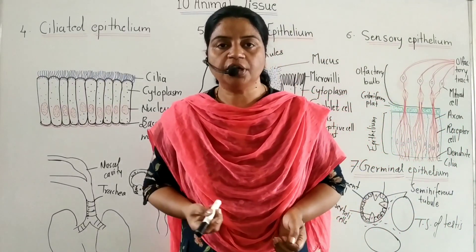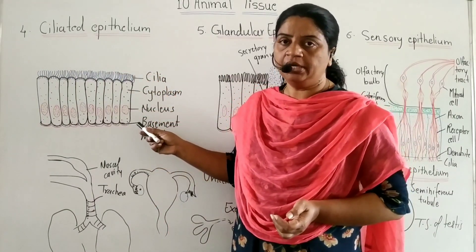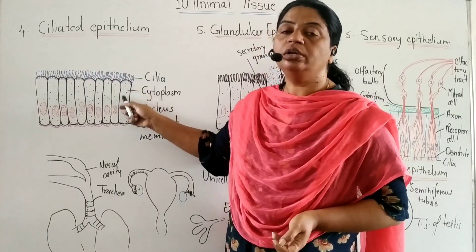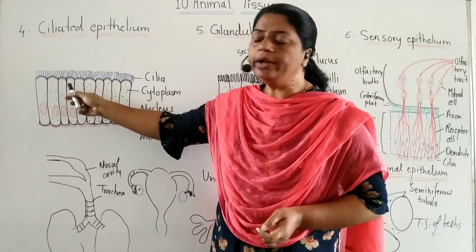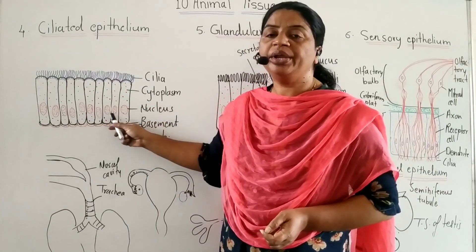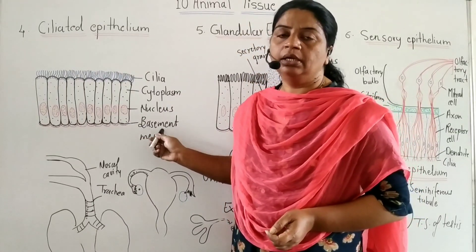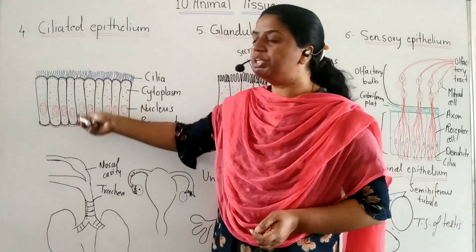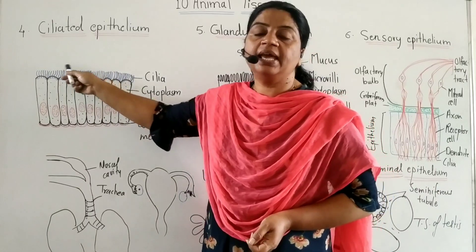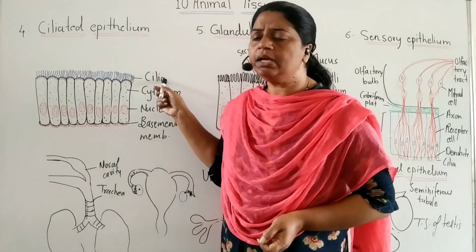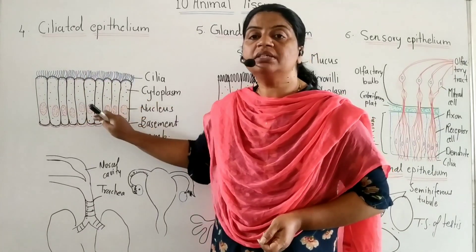Ciliated epithelium: in this type of epithelial tissue, cells are columnar or cuboidal. The free end of the cell is broad and the narrow end rests on a non-cellular double-layer basement membrane. The free end of the cell produces hair-like structures called cilia. They have an oval-shaped nucleus present at the base of the cell.